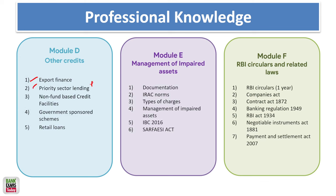Moving forward, cover export finance and priority sector lending — RBI's master circular, which is very important — non-fund based credit facilities, government spending, and government sponsored schemes. There are at least 30-35 schemes including investment schemes like Sukanya Samridhi Yojana, PPF, insurance schemes, Atal Pension Yojana, Jan Dhan Yojana, Mudra Yojana, and all lending schemes. Also cover retail loans and documentation — Registration Act, Stamp Duty Act, Limitation Act, and types of charges.